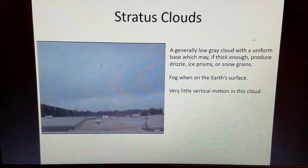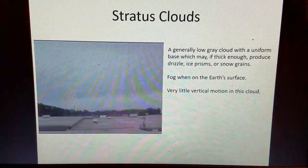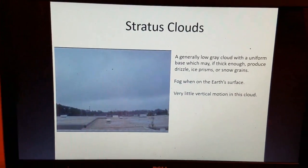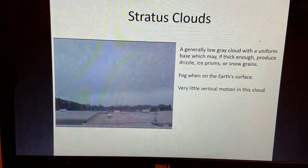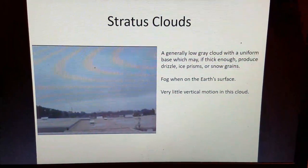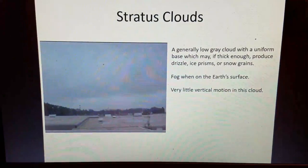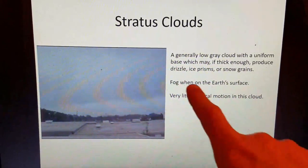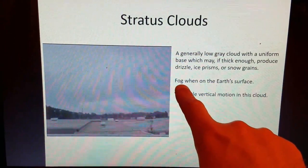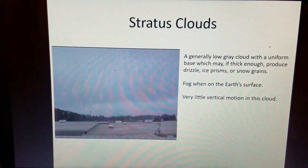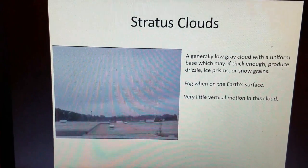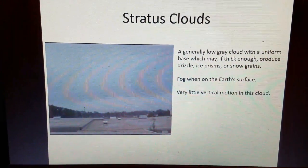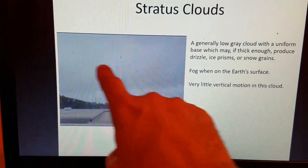Stratus clouds are generally a low gray cloud with a uniform base, which may — if thick enough — produce drizzle, ice prisms, or snow grains. Notice how dull gray and solid this overcast is; these clouds are responsible for your gray, dreary days where you're not very motivated to do anything. Fog is a stratus cloud when on the Earth's surface. Since stratus clouds are so layer-like with very little vertical motion — most of the motion is horizontal, side-to-side.